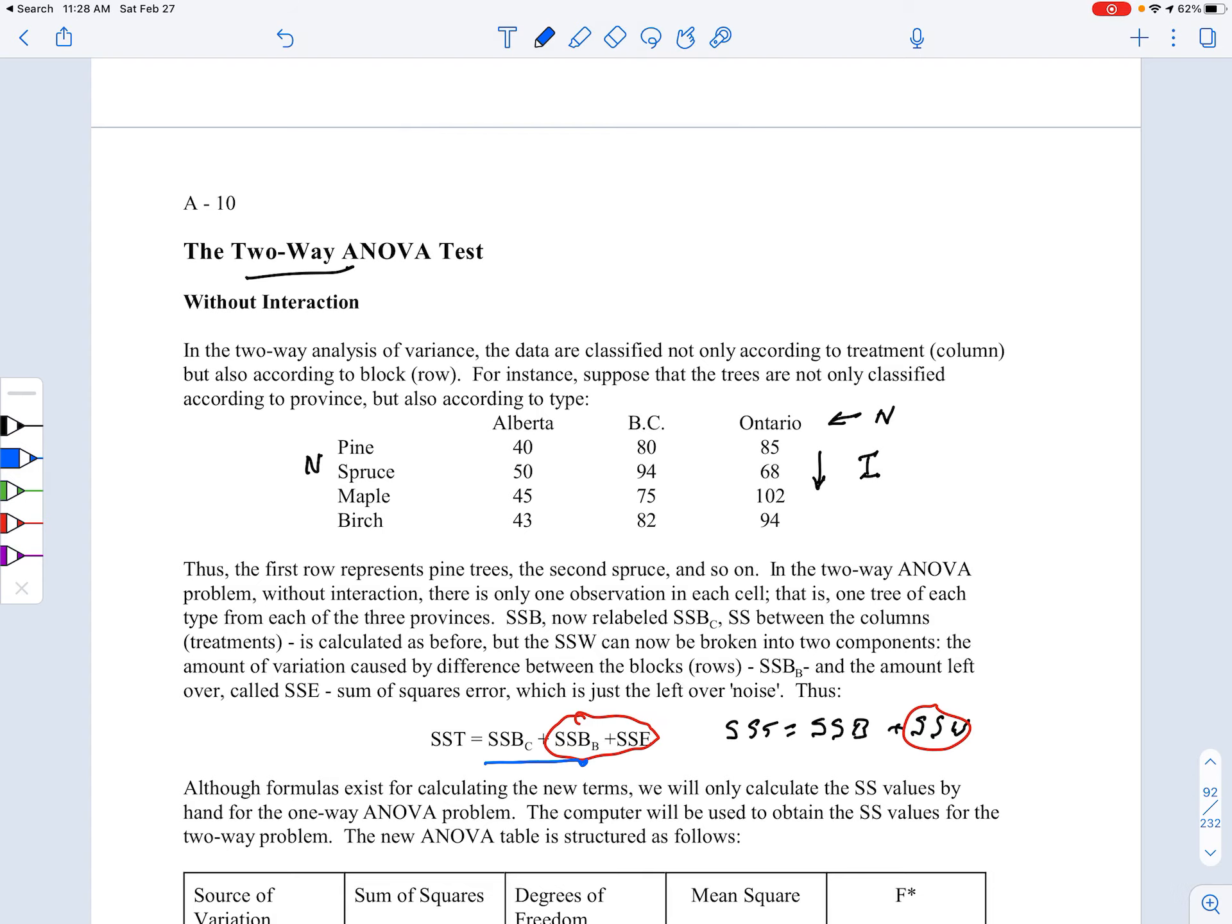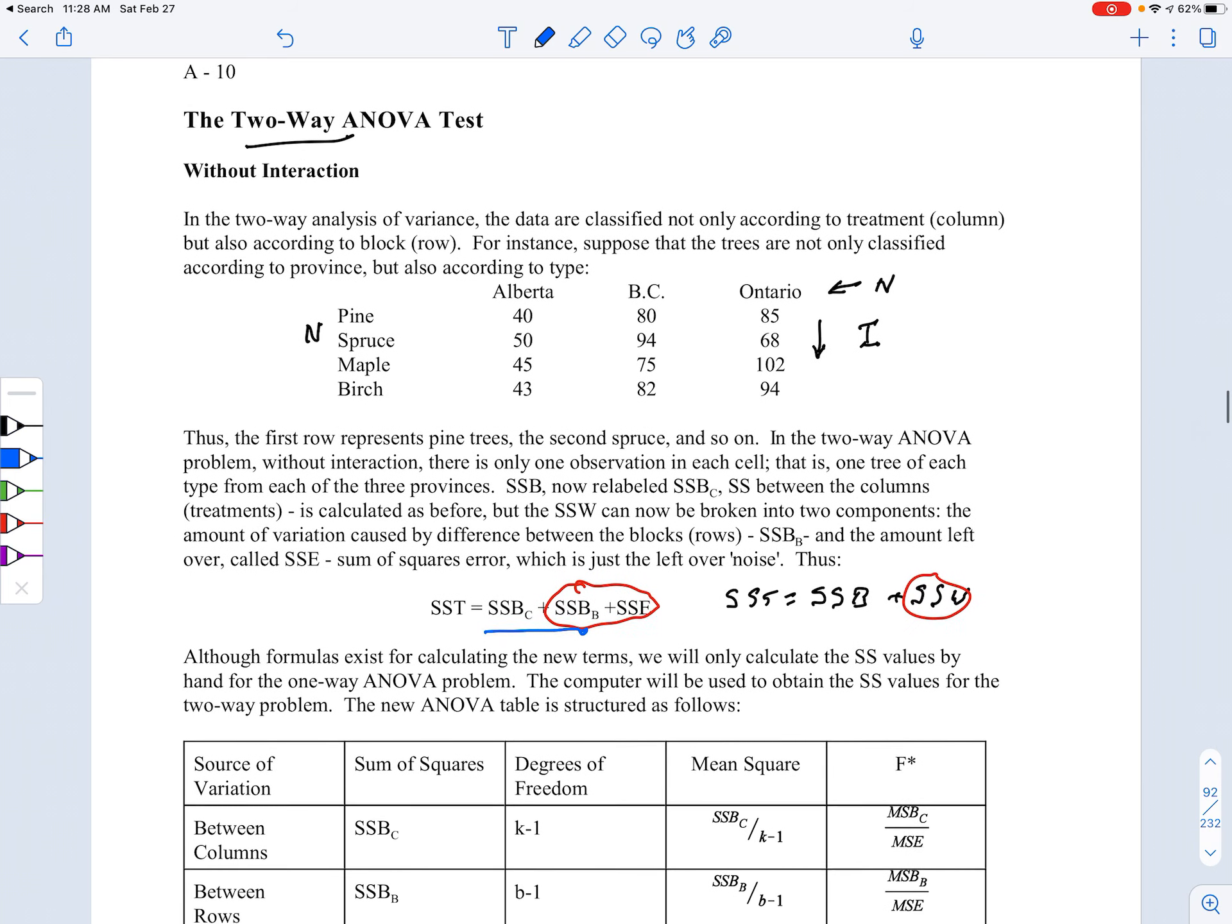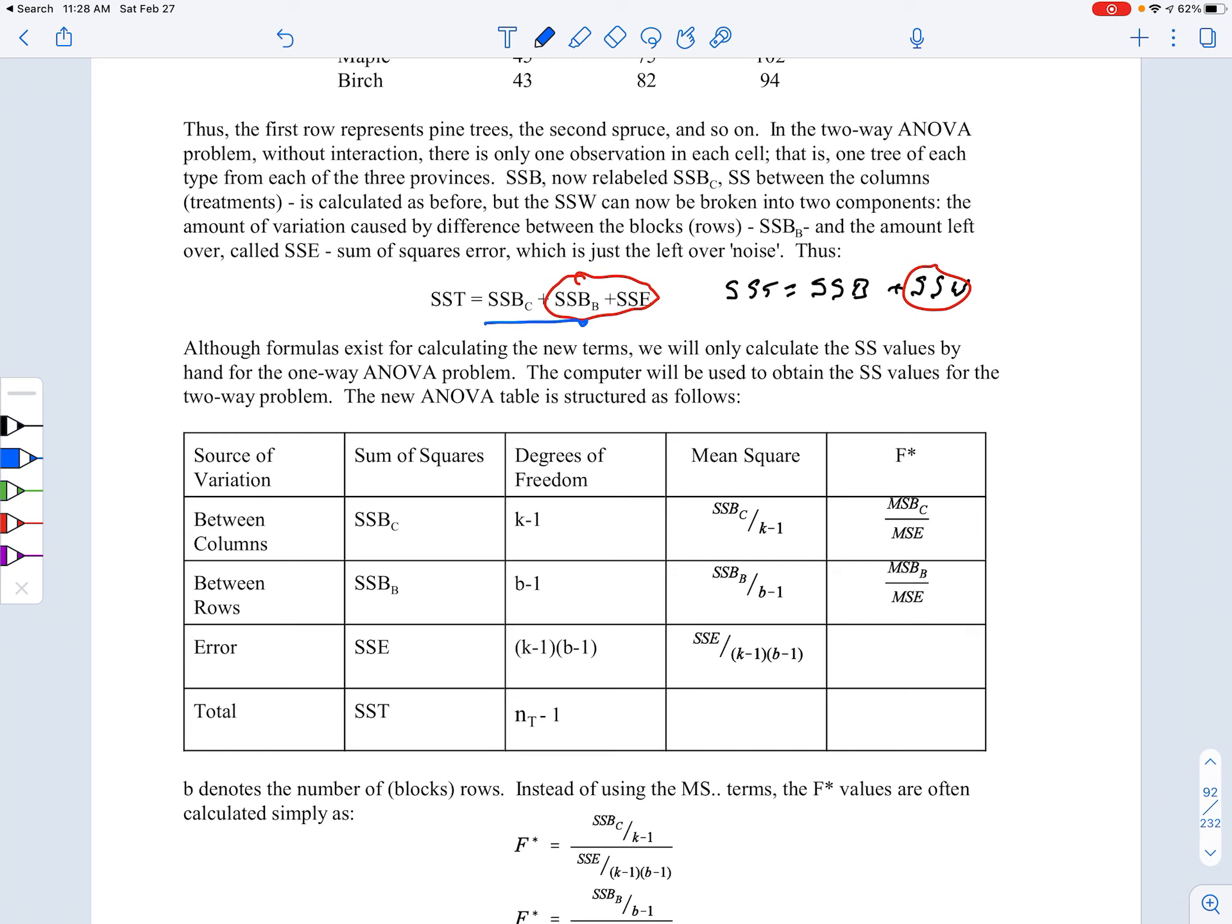What we've done is we've taken what was originally the SSW row and we break that down into two other rows here. The degrees of freedom are still k minus one for the original SSB, nT minus one down here for SST, but we take the nT minus k and we break that down into two components: B minus one, and then for SSE, k minus one times B minus one. That then gives you a couple of F star formulas here.